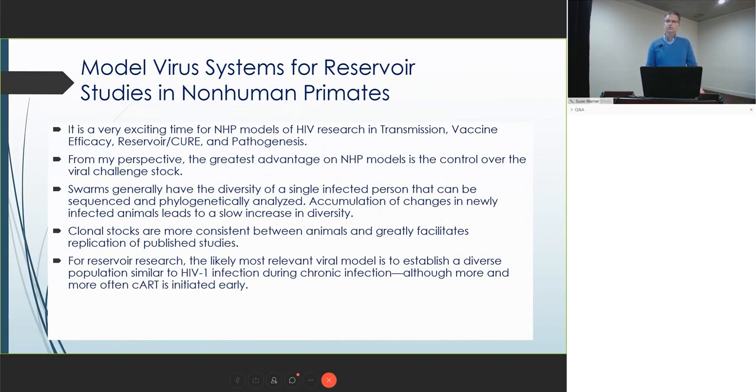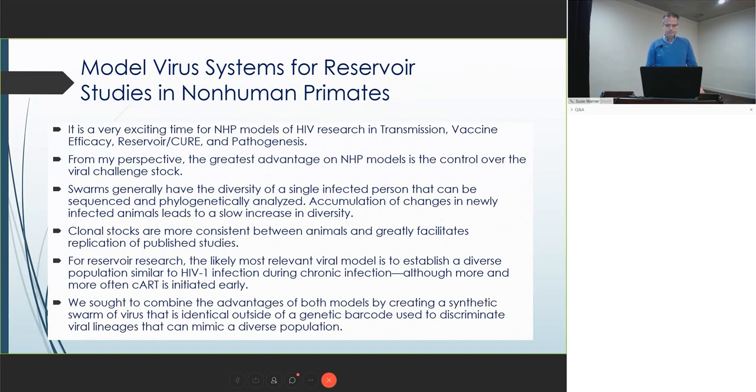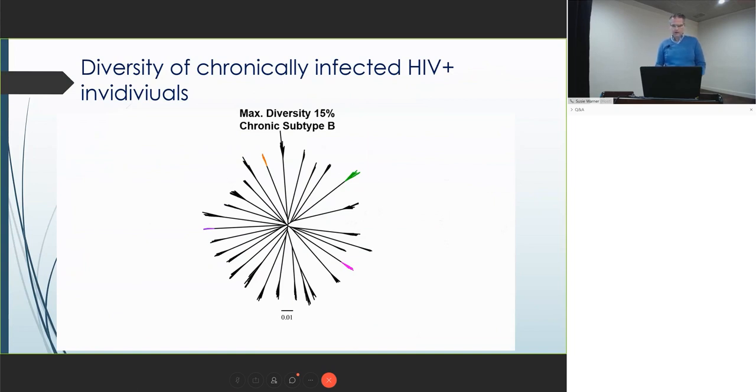For reservoir research, the most likely relevant model is to establish a diverse population similar to HIV infected during the chronic infection, and more and more often, ART is initiated early. So those models are variable. We've sought to combine the advantages of both models, clone and swarm, by using a synthetic swarm of identical virus with a genetic barcode.